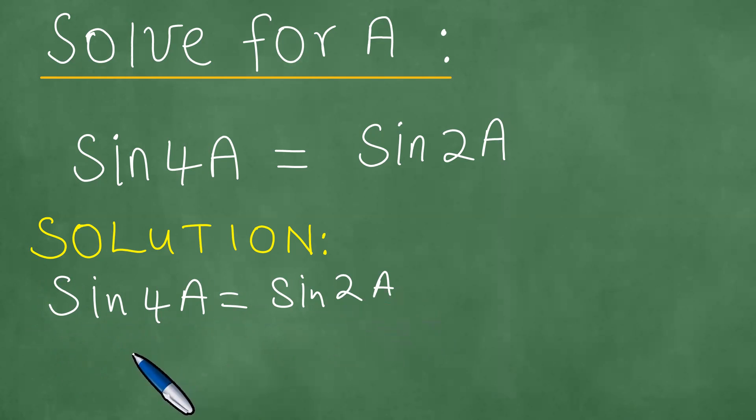And what is the meaning of this here? If this is the case, this means that 4A is equal to 2A plus multiples of the period, 360 degrees times k, where k is an element of the set of integers. This is what we are able to achieve.